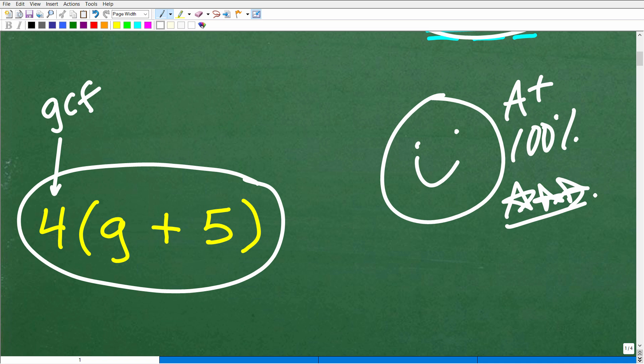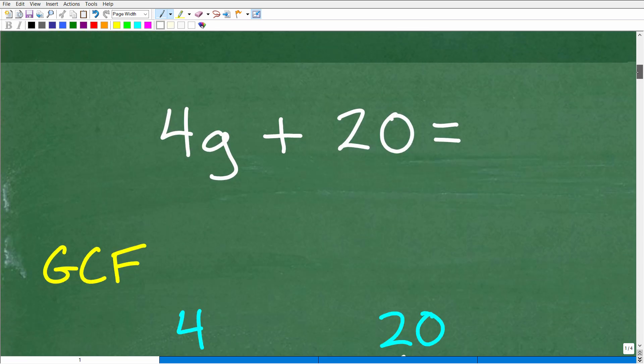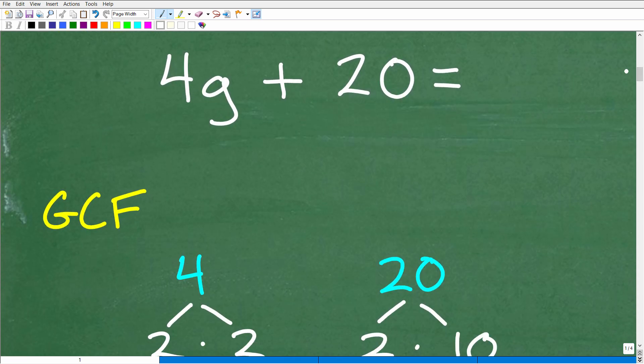If you didn't get this right, no big deal. I'm going to explain to you what the GCF is and how to factor it out. This is a pretty easy problem, but you certainly want to challenge yourself with more complicated problems. Here is the problem: 4g plus 20. Let's first understand what the GCF is. It's an acronym. It stands for the greatest common factor. Let's take a look at this expression, but let's just take a look at the numbers here. We'll skip the g for now. Here we have 4 and here we have 20.